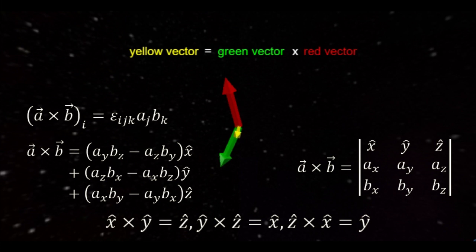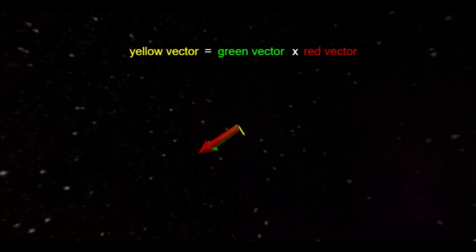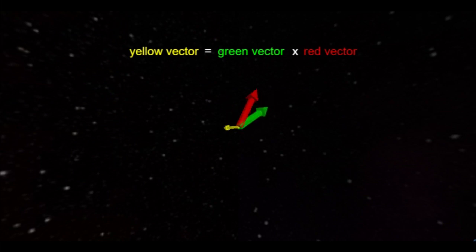But the most important features to keep in mind are: one, the third vector is always perpendicular to the first two. Two, the cross product gives a larger result if the input vectors are close to perpendicular with each other.